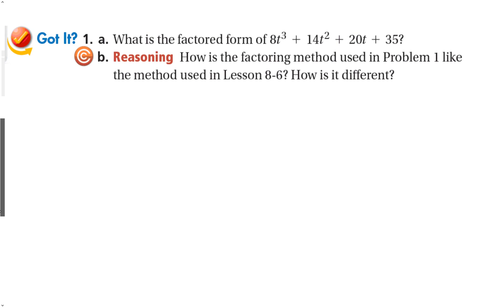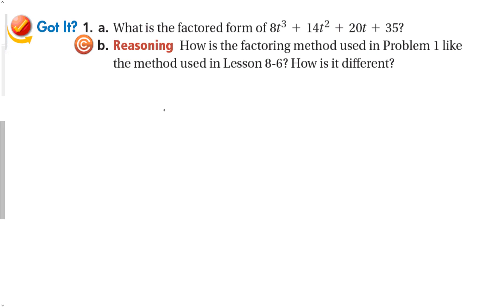Let's look at that again. So let me rewrite this. 8t to the 3rd plus 14t squared plus 20t plus 35. The first term has 2 in common. 2t, 2t squared. What's left over? 4t plus 7.